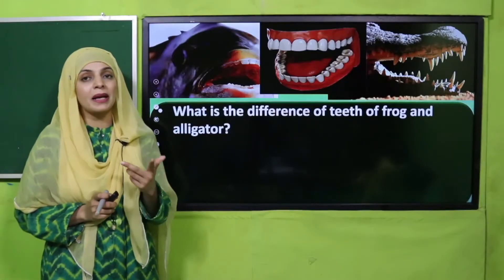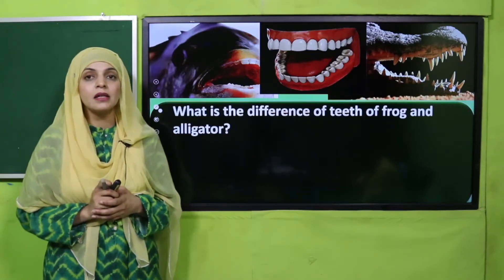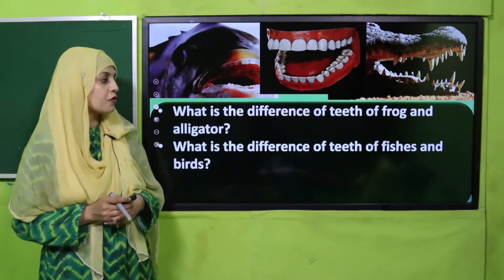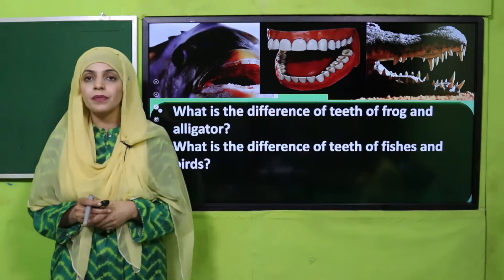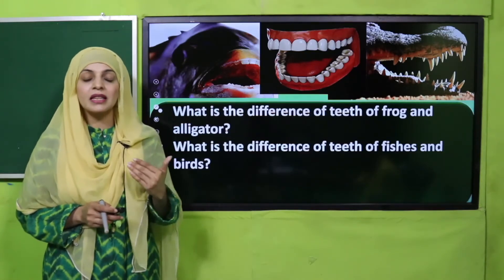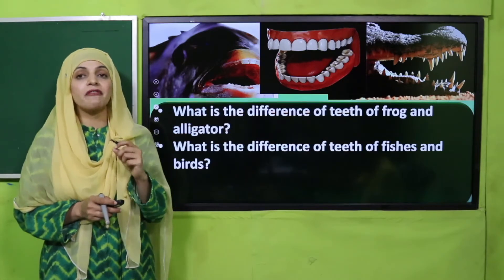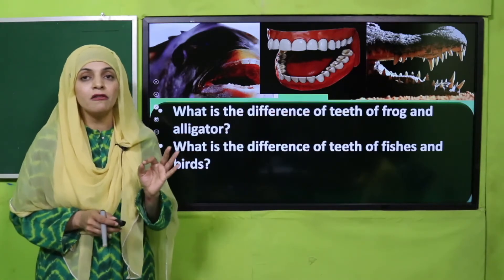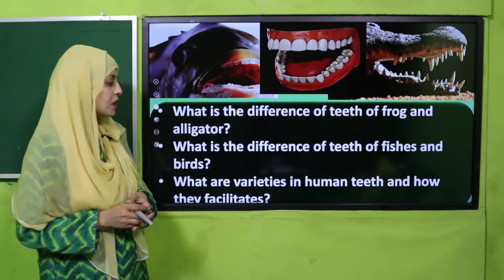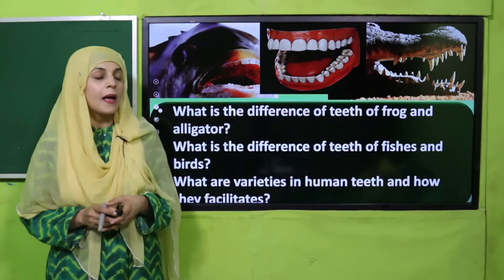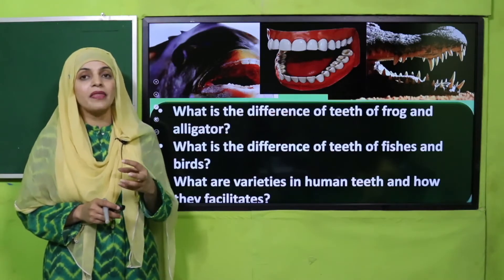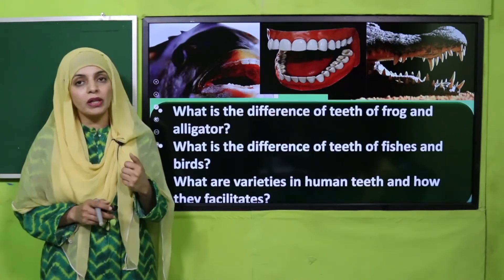What is the difference between the teeth of a frog and an alligator? A frog has two types of teeth — vomerine and maxillary. An alligator has conical teeth. What is the difference between the teeth of fishes and birds? Birds do not have any teeth — they have ridges — whereas fish have very small teeth for tearing the flesh. Humans have a variety of teeth: conical, flat, and pointed, which help in tearing, grinding, and chewing food.